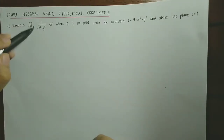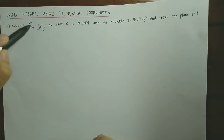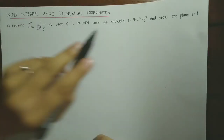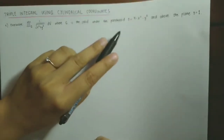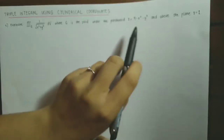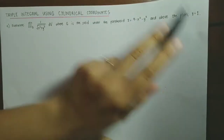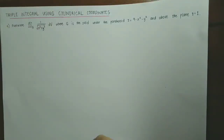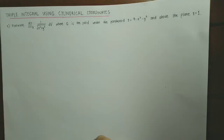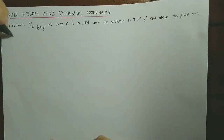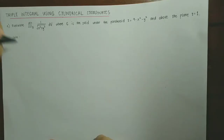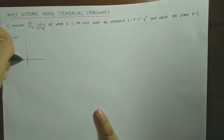First, evaluate the triple integral over region G, where G is the solid under the paraboloid z = 9 - x² - y² and above the plane z = 1, and the integrand is 1 over the square root of x² + y².